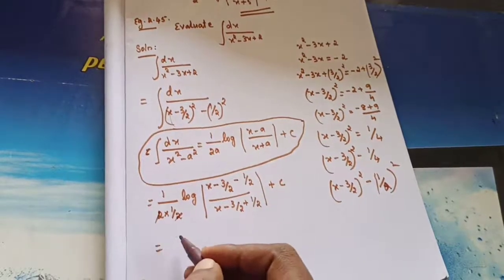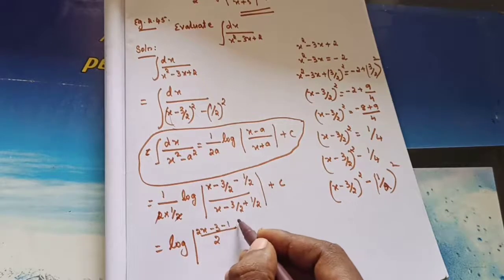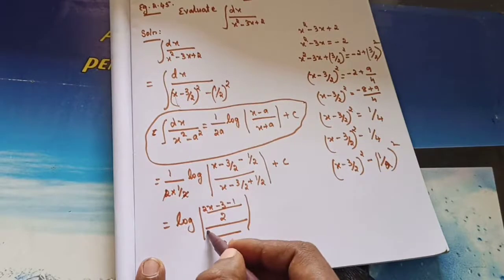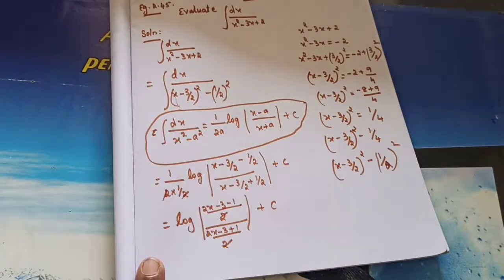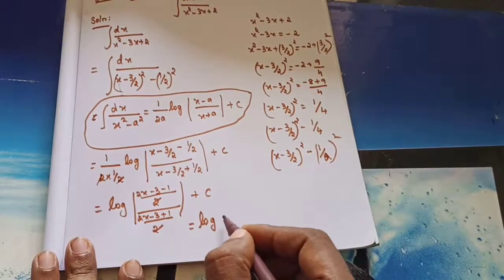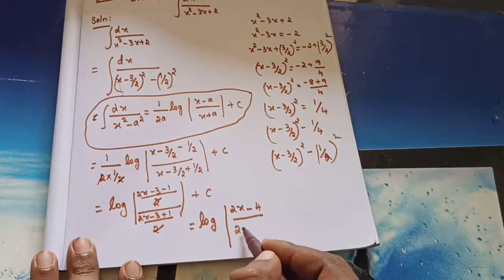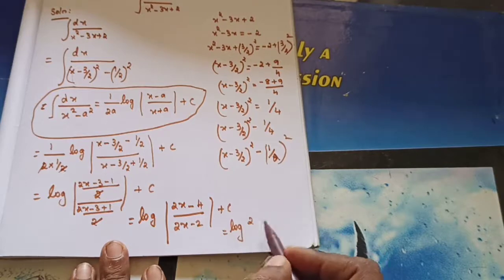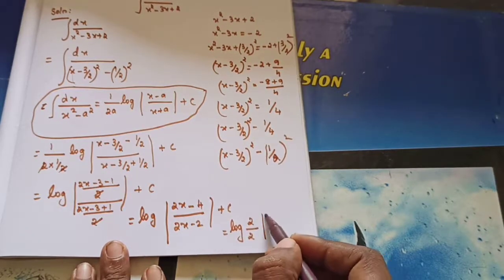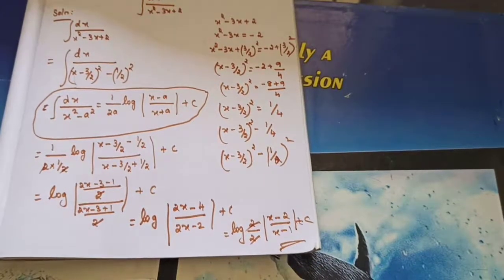Simplify: 2 and 2 cancel. Take the LCM inside — numerator: 2x minus 3 minus 1 equals 2x minus 4; denominator: 2x minus 3 plus 1 equals 2x minus 2. These 2s cancel. So what's the answer? Log|(x minus 2)/(x minus 1)| plus C. So the answer is log|(x minus 2)/(x minus 1)| plus C.